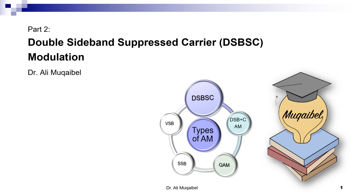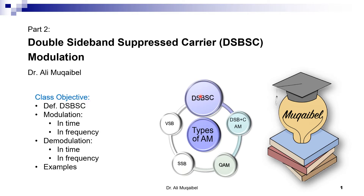This is Dr. Ali Mogabel and we are doing the first kind of amplitude modulation. This is Part Two titled Double Sideband Suppressed Carrier, DSB-SC. Remember the block we had seen before — there are different types of AM and now we are focusing on the first type. The class objectives will cover the definition of DSB-SC, modulation and demodulation. We will show things in time and in frequency and conclude with some examples.